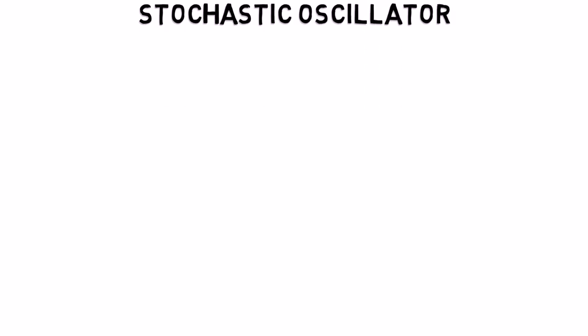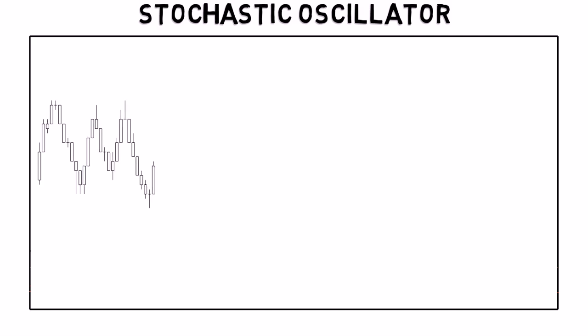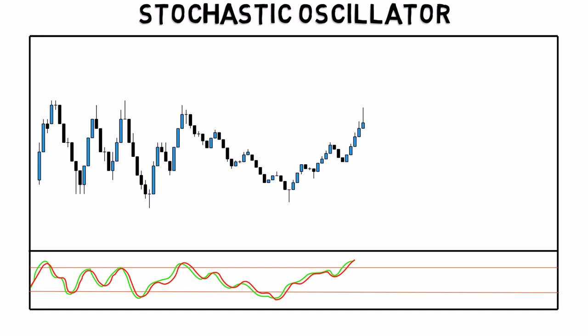The stochastic oscillator is a momentum indicator, similar to the RSI. This indicator measures overbought and oversold conditions in the market. Typically, a reading above the 80 level shows overbought conditions and below 20 shows oversold conditions in the market.